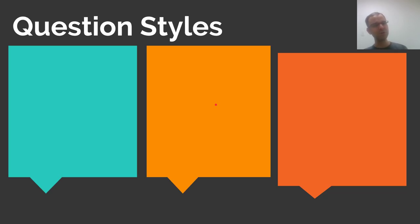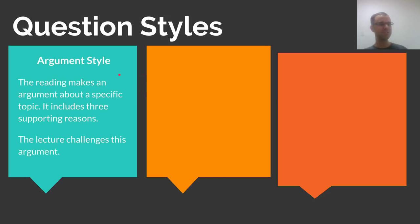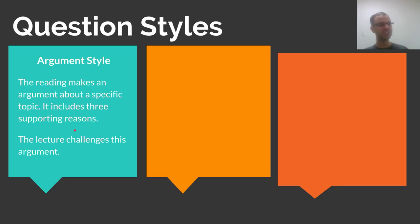All right, let's begin by talking about the three main styles of integrated writing questions you might face on the test. First up is the argument style. Here, the reading makes an argument about a specific topic. It includes three supporting reasons. After you read this article, you listen to a lecture which challenges this argument.